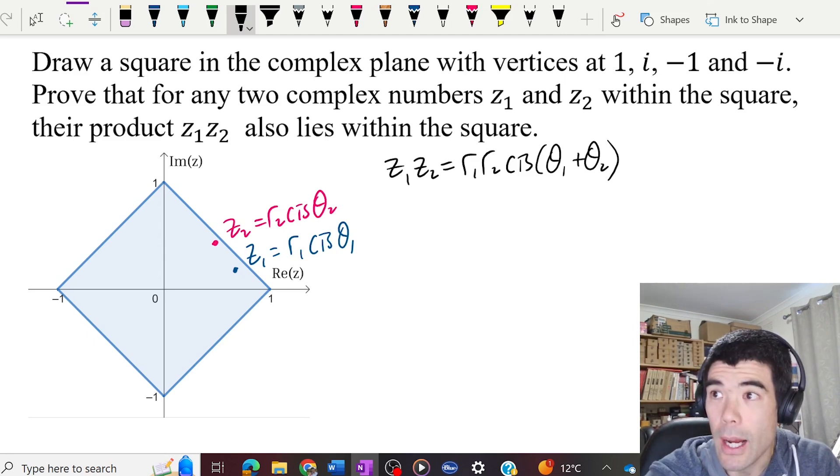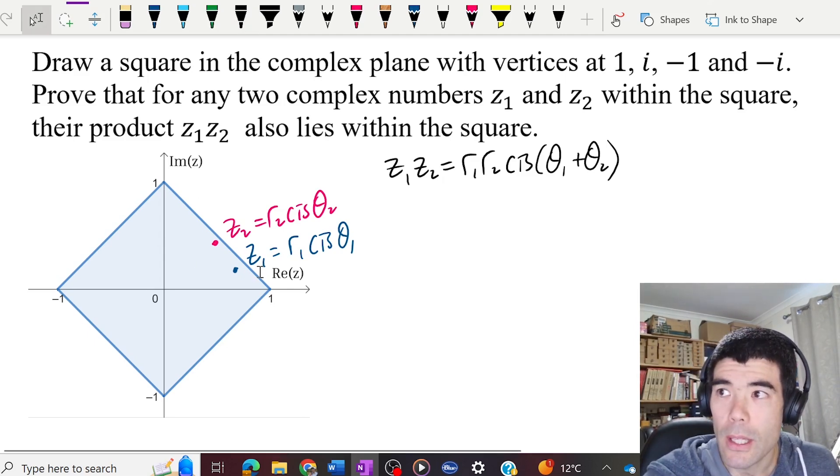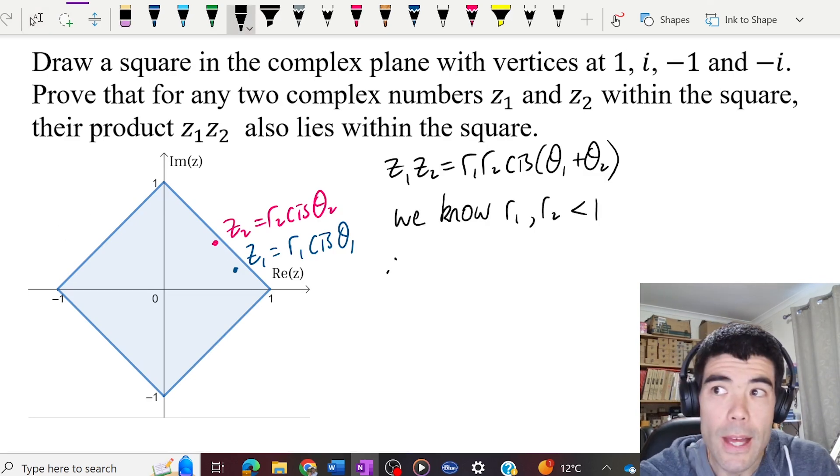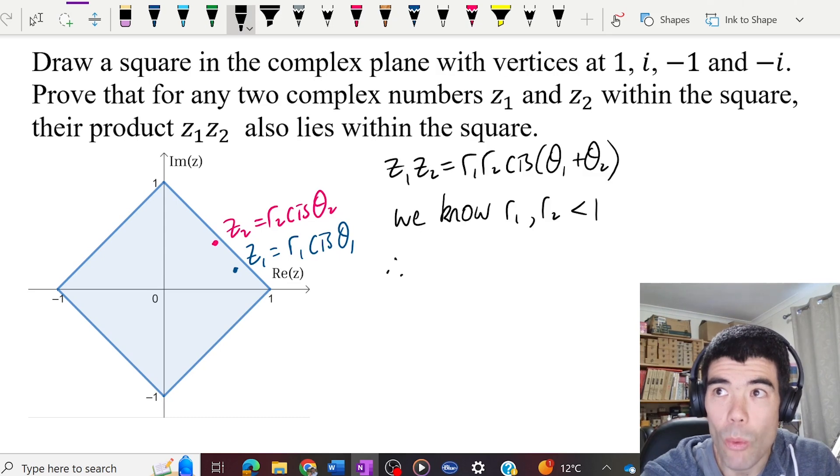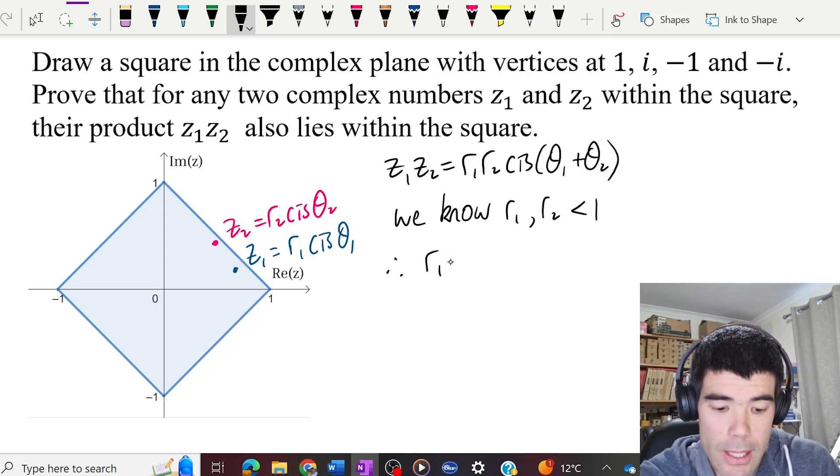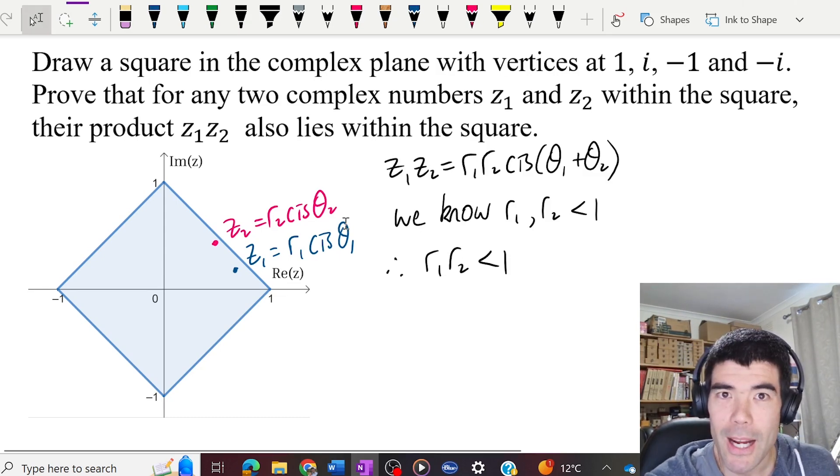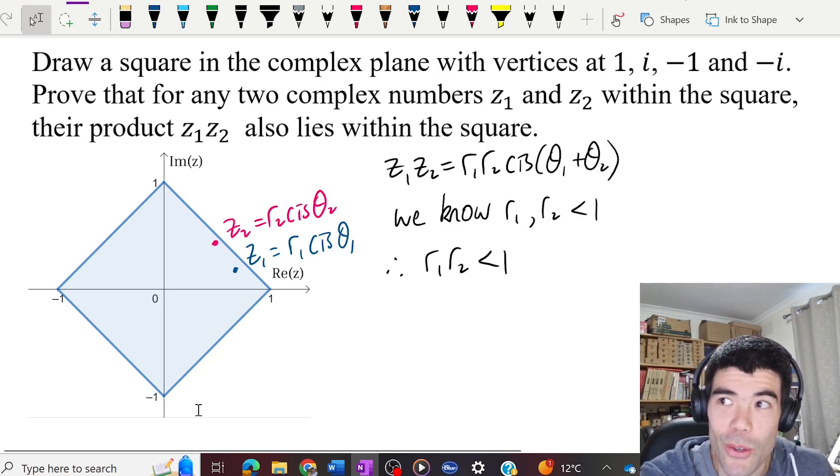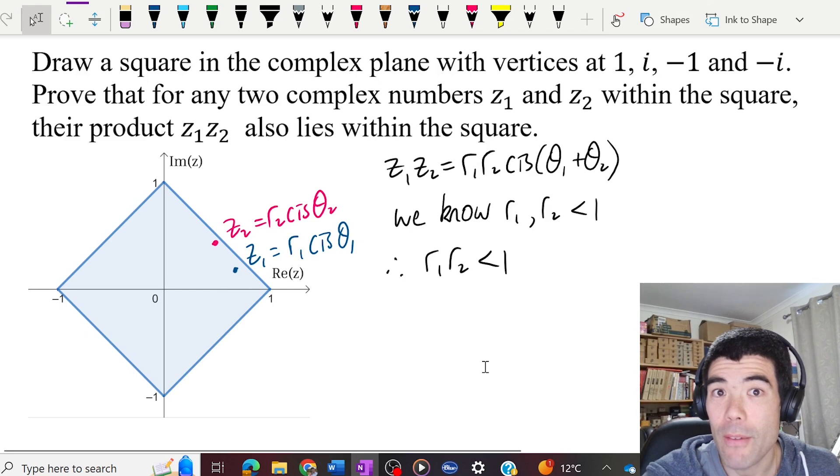We know that r1 and r2 are both less than 1, because it's within this square. So definitely these complex numbers are both within a circle of radius 1. That's enough to guarantee that the product r1 r2 is going to be less than 1. But actually it's not enough to guarantee that it's going to be within this square. So the problem is actually harder than I initially thought. I encourage you to pause the video, have a think about it, and come back when you're ready.